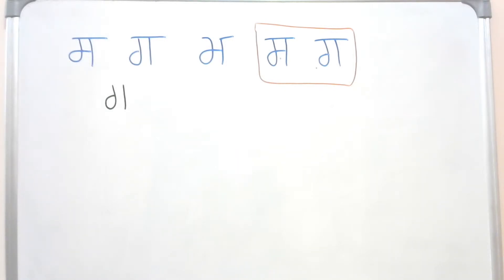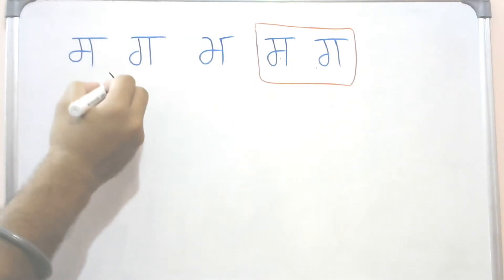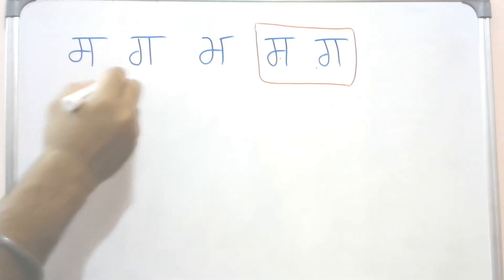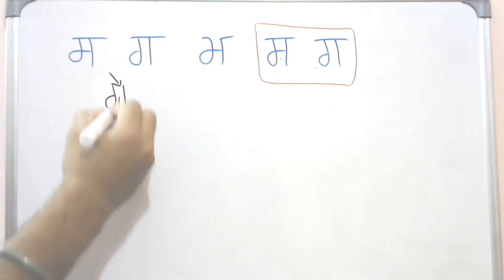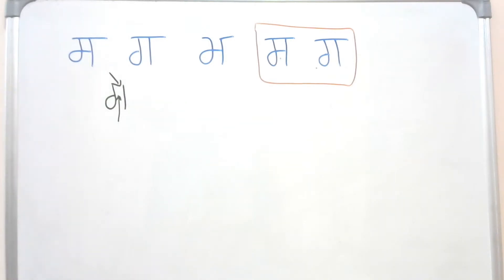Now, the only difference we are going to see is we can have a line on the top of this letter or structure, or we cannot have a line on the top. Similarly, we can have a line in the middle or we cannot have a line in the middle. So it gives us four different possibilities to make a letter using this base structure.